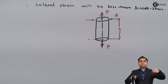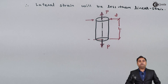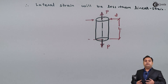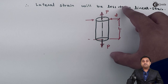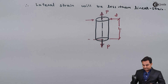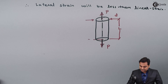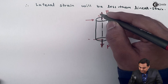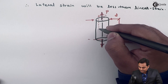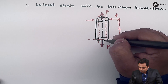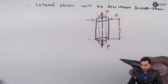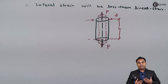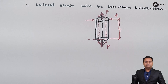Because of the action of this pull type of load, the length of the bar will go on increasing and its diameter will go on decreasing. So here I can explain this by drawing a diagram — this would be the diagram of the bar when it is subjected to pull: it will deform, length will increase, diameter will decrease.